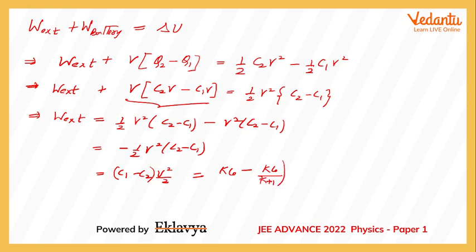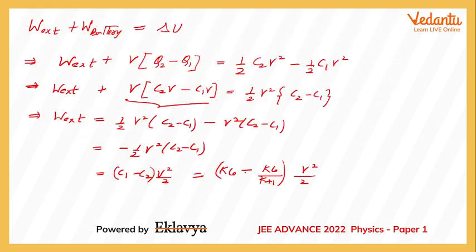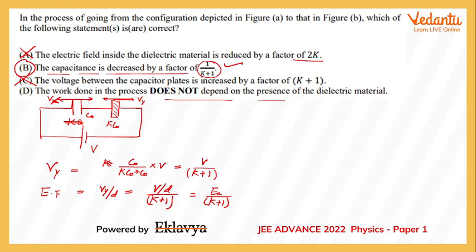C1 minus C2 is how much? C1 was K times C0, and C2 was K times C0 upon K plus 1, into V squared by 2. Now you can stop doing the question here only because it says that it does not depend on the presence of dielectric material, but I do think that in this expression K is not going to get cancelled. Just to be sure, let's finish the calculation. I'm taking out K C0 as a common quantity, so I get K plus 1 minus 1, that's K upon K plus 1 into V squared by 2. That is the answer we are going to get.